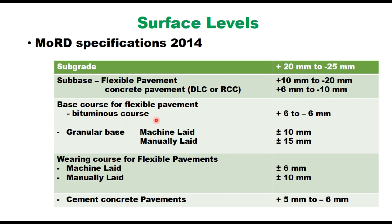Base course for flexible pavement: in case of bituminous course it is plus or minus 6 mm; in case of granular base it is plus or minus 10 mm; for manually laid it is plus or minus 15 mm. Wearing course for flexible pavement is plus 6 mm for machine-laid layer and plus or minus 10 mm for manually laid. For cement concrete pavement, it is plus 5 mm to minus 6 mm.